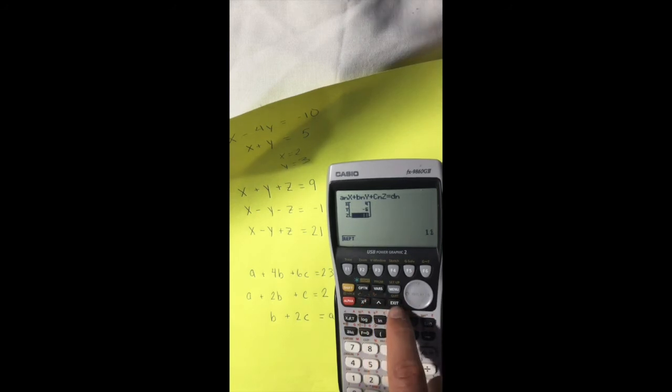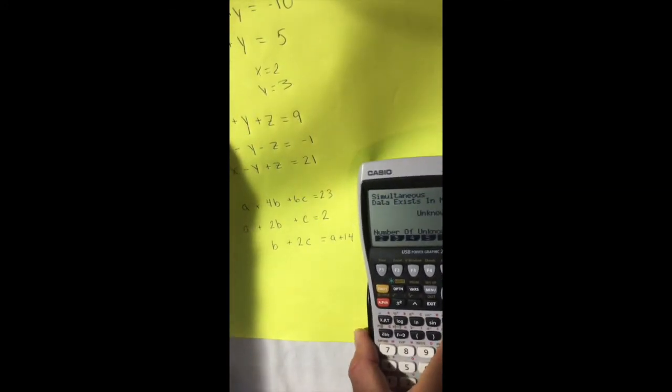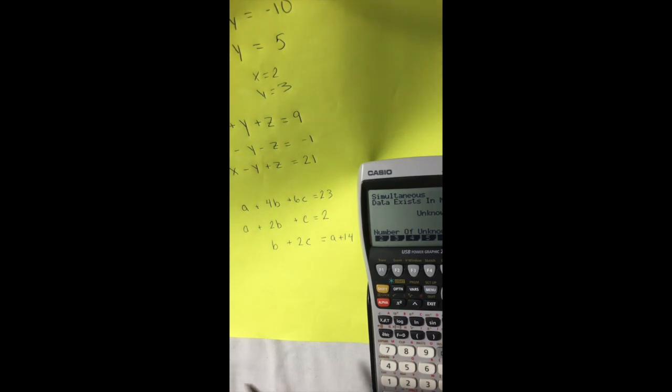Finally, for the last equation, again, this one has three unknowns and three equations. However, it's not set up correctly. We have this a on the wrong side.